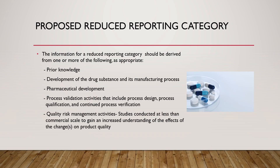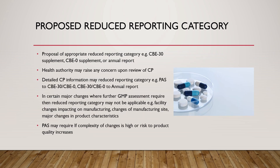The proposed reduced reporting category should be derived from one or more of the following as appropriate: prior knowledge; development of the drug substance and its manufacturing process; pharmaceutical development; process validation activities that include process design, process qualification, and continued process verification; quality risk management activities; and studies conducted at less than commercial scale to gain and increase understanding of the effect of changes on product quality. The proposal of appropriate reduced reporting category can be a CBE-30 supplement, CBE-0 supplement, or annual report.